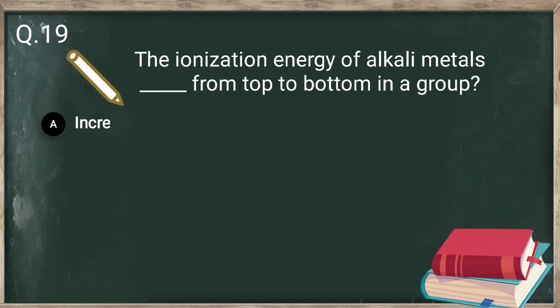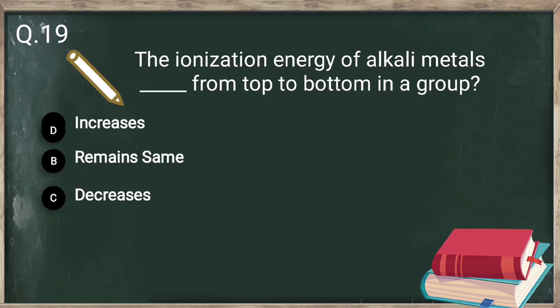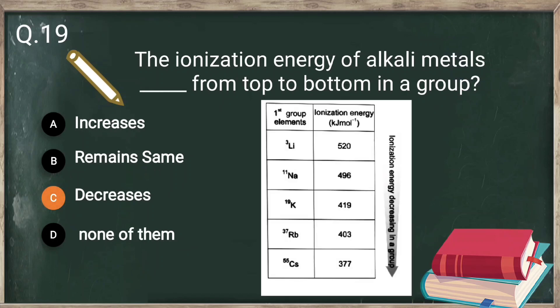Question number 19: the ionization energy of alkali metals from top to bottom in a group — what happens? It decreases. Because atomic size increases from top to bottom, and since the trend of ionization energy is opposite to atomic size, ionization energy decreases from top to bottom.